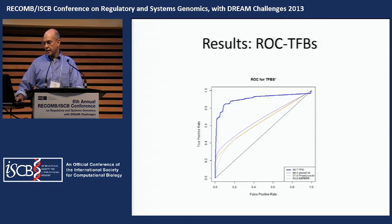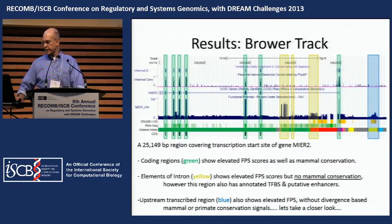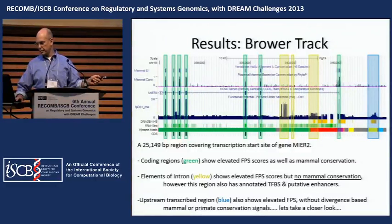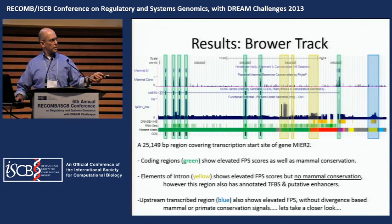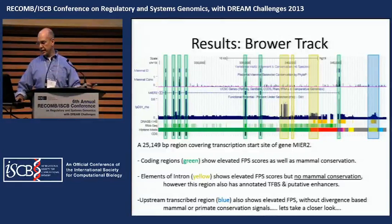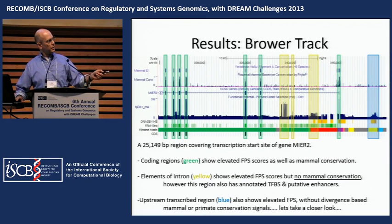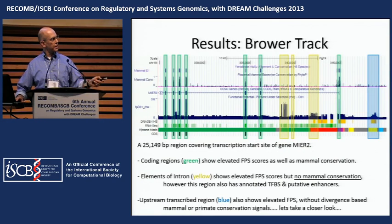When used as a composite browser track, the functional potential score with its corresponding functional signatures becomes a powerful visual tool for exploring non-coding DNA. This browser shot displays the transcription start site of the gene MIER2. At the top are mammal-based conservation scores, followed by the transcribed region, then the functional potential score, and finally the covariates — the functional assays defining the functional classes. The protein-coding regions are highlighted in green and, as expected, have both high mammalian conservation and high functional potential scores. The functional potential score also identifies regions in the first intron that are under selective pressure and contain both transcription factor binding sites and putative enhancers.